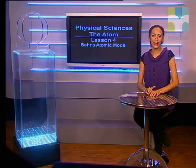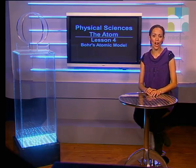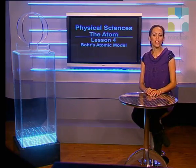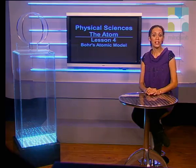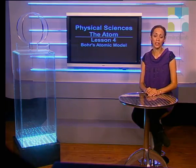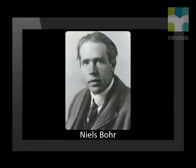Hi everyone. Welcome to the fourth lesson in this series on the atom. Today we will look at Bohr's atomic model. You should remember that one of the problems of Rutherford's atomic model was that the experimental evidence of spectral lines contradicted his model. Bohr proposed his model of the atom based on ideas about light to help explain this contradiction.